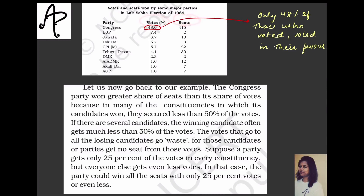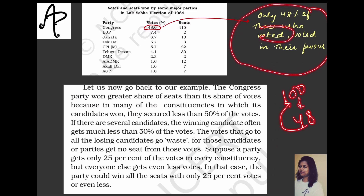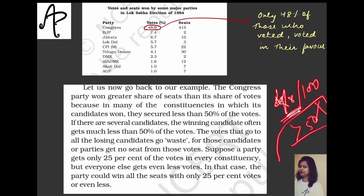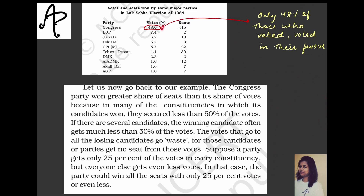Let's look at the example of the 1984 Lok Sabha election. Congress got 48% of votes but won 415 seats out of 543. So 48 out of every 100 voters voted in their favor — not more than 50%, so no majority was secured. But they got more votes compared to others. There is clearly no proportion between vote percentage and number of seats.